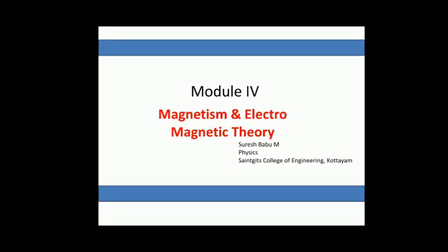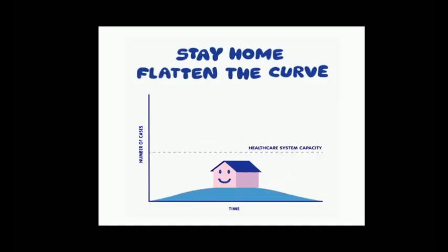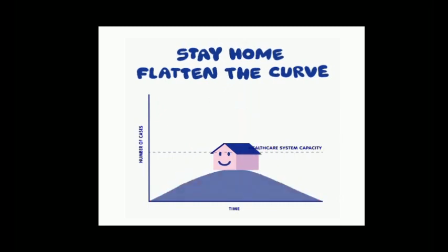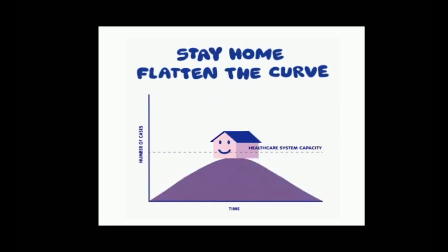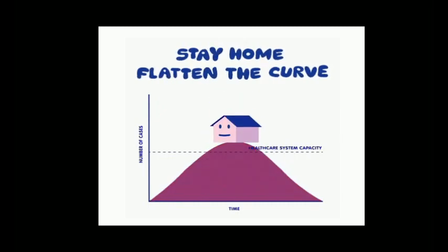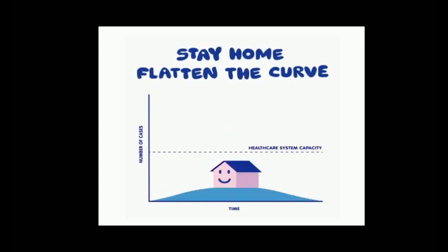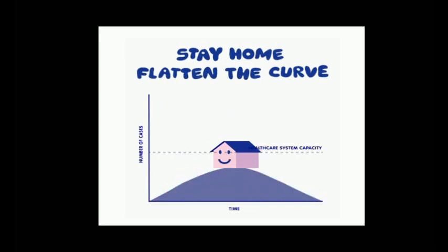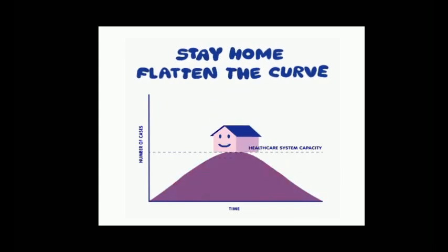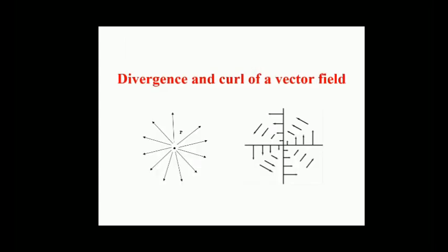Hi, greetings to all. There is currently no vaccine to prevent coronavirus disease. The virus is thought to spread mainly from person to person, hence the best way to prevent illness is to avoid being exposed to this virus, so better stay inside your home. Today I will discuss about divergence and curl of vector fields and their physical significance in vector calculus.